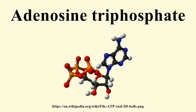In glycolysis, glucose and glycerol are metabolized to pyruvate via the glycolytic pathway. In most organisms, this process occurs in the cytosol, but in some protozoa such as the kinetoplastids, this is carried out in a specialized organelle called the glycosome. Glycolysis generates a net two molecules of ATP through substrate phosphorylation catalyzed by two enzymes, PGK and pyruvate kinase. Two molecules of NADH are also produced, which can be oxidized via the electron transport chain and result in the generation of additional ATP by ATP synthase.